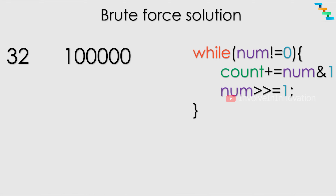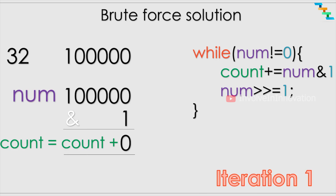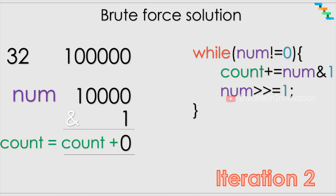We will always be checking the last index. In iteration one, the number is 100000 (binary of 32). We do the AND operation with 1 and get zero, so the count stays zero. After right shifting by one, we get 010000 (16). In the second iteration, we AND 16 with 1 and again get zero because the last bit is still zero. Right shifting 16 gives us 8.